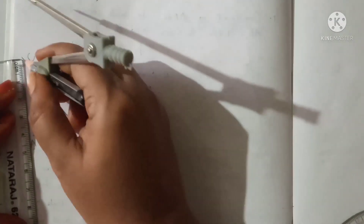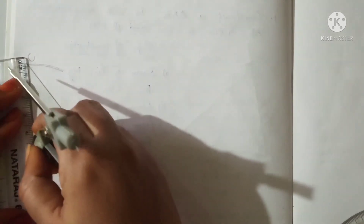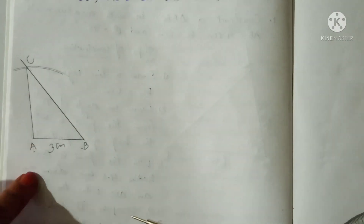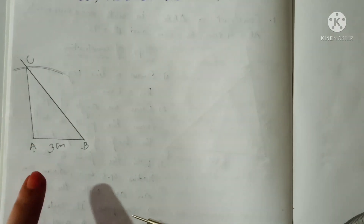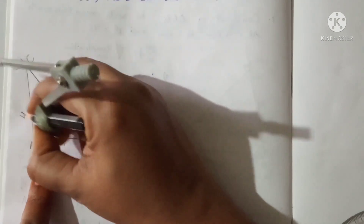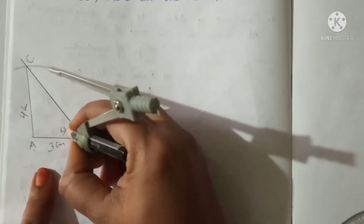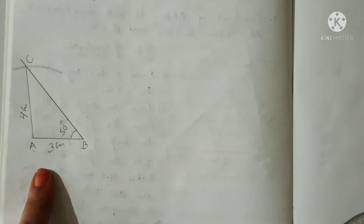Now join C and A. A triangle is formed. This is the required triangle ABC, where AC is 4 centimeters and angle B is 50 degrees. Thus the required triangle is formed.